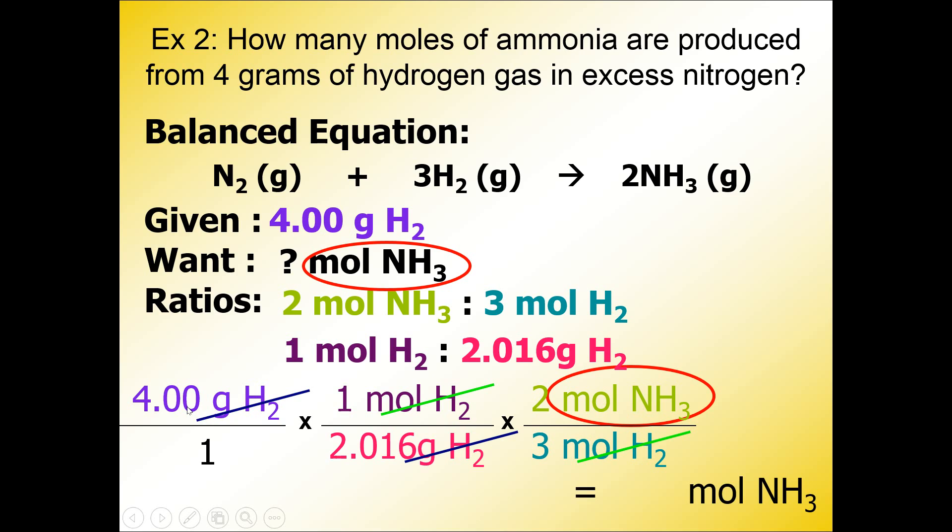I type in, watch carefully by the way because I have two numbers in the denominator and you want to make sure to type it in right. I'm going to type in 4 times 2 divided by 2.016 divided by 3. And I get 1.32 moles.